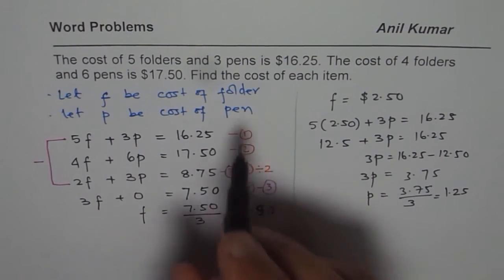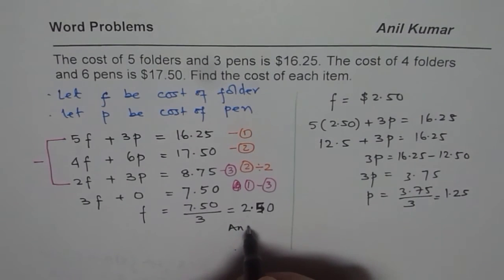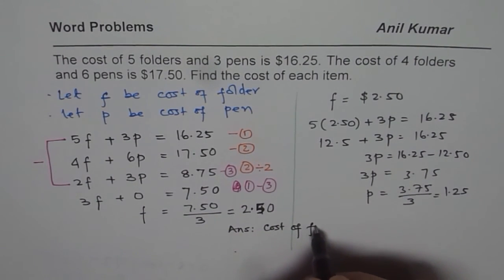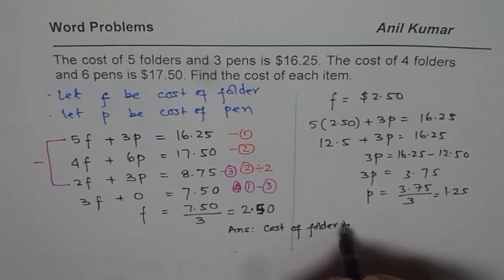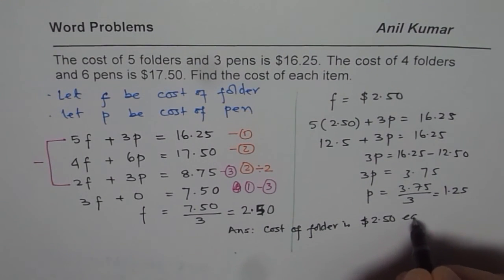Now you get your answer. And it says find the cost of each item. So we write down our answer as cost of folder is $2.50 each.